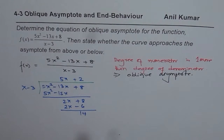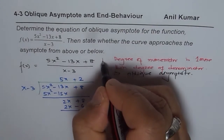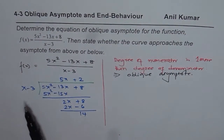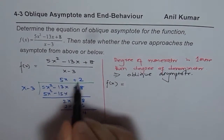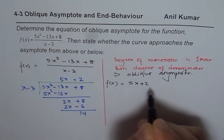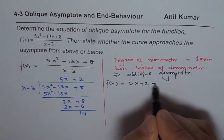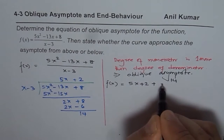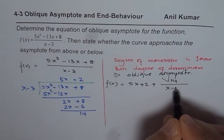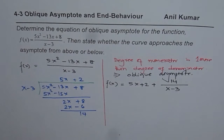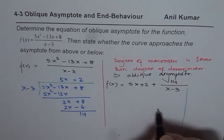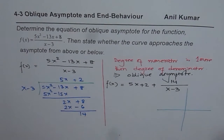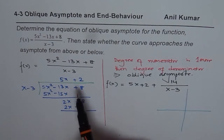Once we get this, we can write the function using the division statement. So f(x) equals the quotient 5x plus 2 plus the remainder 14 divided by (x minus 3). This shows that the function has an oblique asymptote. The equation of the oblique asymptote is y = 5x plus 2.